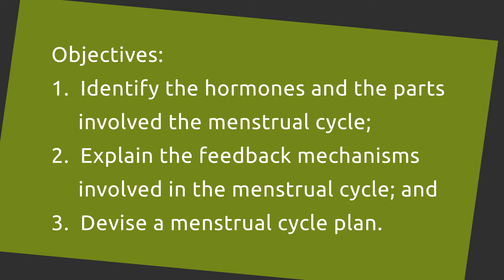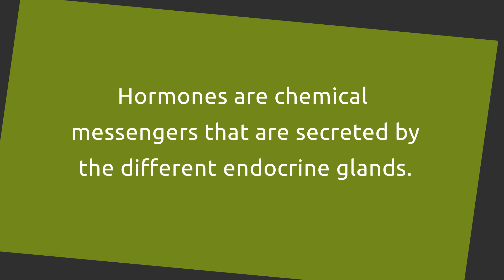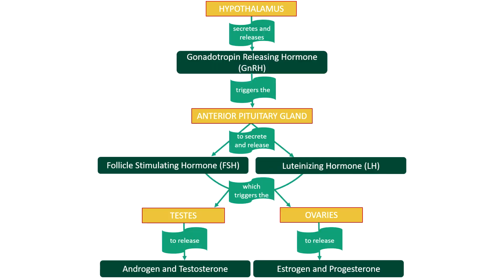Before we tackle this new topic, we first recall the past lesson on the role of hormones in the reproductive system. Hormones are chemical messengers secreted by the different endocrine glands. The hypothalamus in the brain secretes gonadotrophin-releasing hormone (GnRH), which triggers the anterior pituitary gland to secrete follicle-stimulating hormone (FSH) and luteinizing hormone (LH), which in turn triggers the testes to secrete androgen and testosterone, and the ovaries to secrete estrogen and progesterone. These hormones influence male and female physical traits and the production of sperm cells and maturation of egg cells.